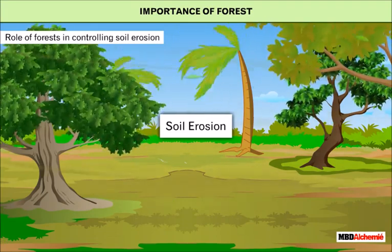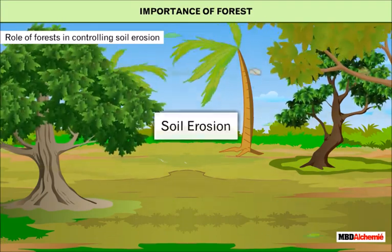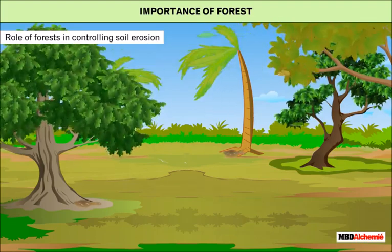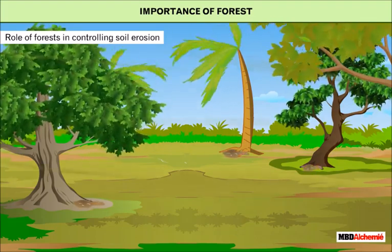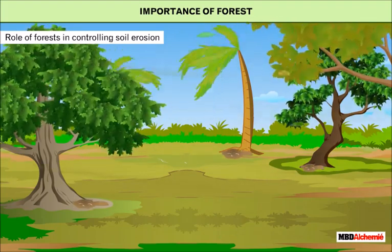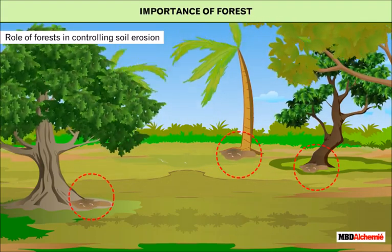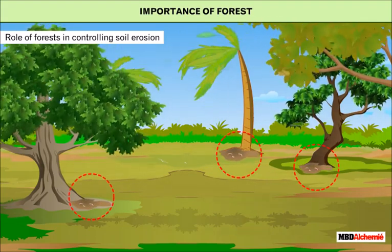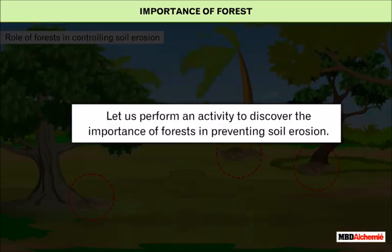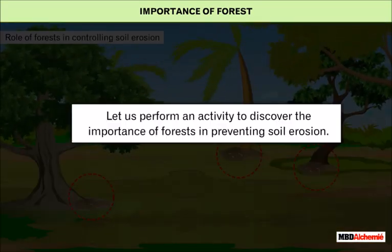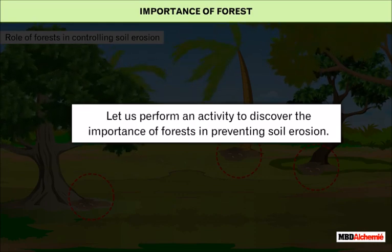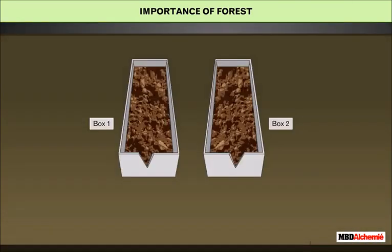The removal of soil from the land surface by water, wind, or ice is known as soil erosion. The roots of trees present in the forest hold soil particles together and thus prevent soil erosion.